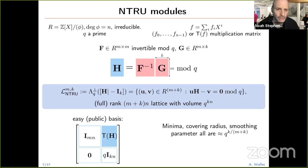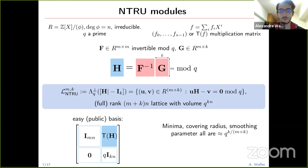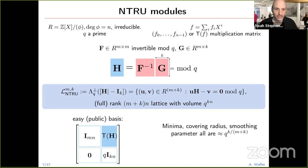A question from Noah: is the standard NTRU parameterization just m=k=1, and is this a generalization of that? Yes, exactly — the very standard NTRU is the case m=k=1, where F and G are just elements in the ring.